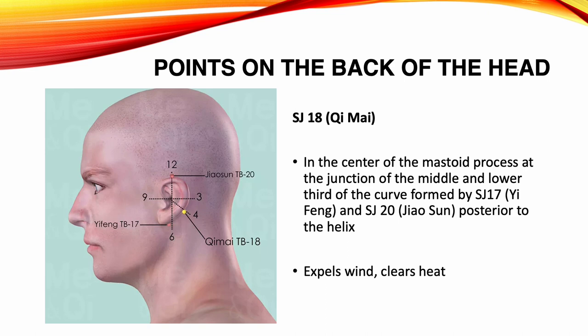Sanjiao 18, Chumai. Location: in the center of the mastoid process, at the junction of the middle and lower third of the curve formed by Sanjiao 17 and Sanjiao 20 posterior to the helix. Functions: expels wind, clears heat. Indications: headache, tinnitus, deafness, blurred vision, redness of the eyes, convulsions in infants.